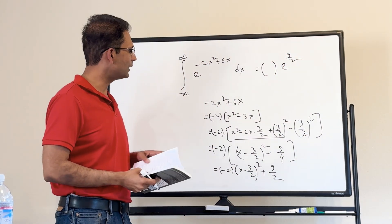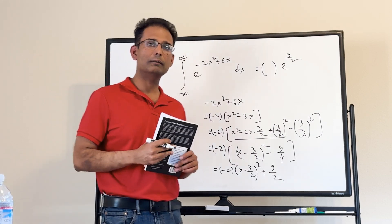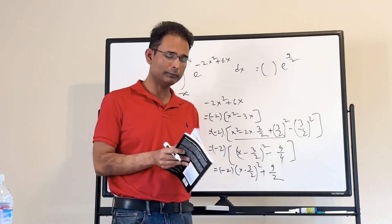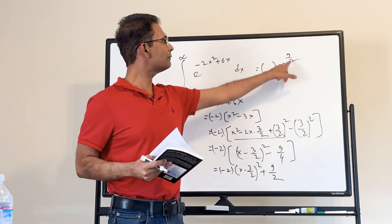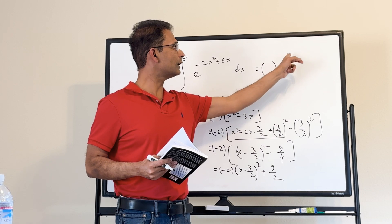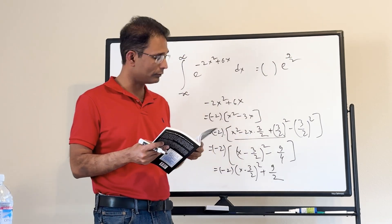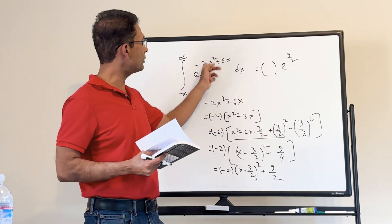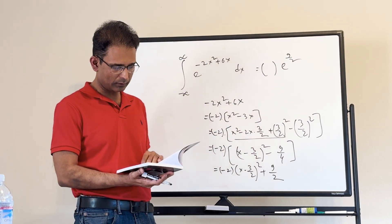This is an interesting feature of Gaussian integrals: in the exponent of the result you have the maximum value of the expression in the integrand.